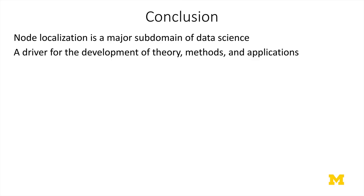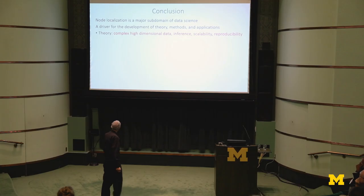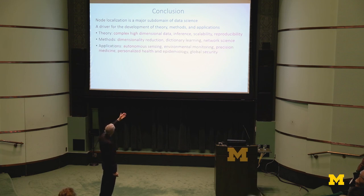I won't discuss the other areas because I've already talked enough. My conclusions — which you should understand after being hit on the head several times — are that node localization is a major problem and a major opportunity. It's a subdomain of data science that, just like other domains requiring extraction of information of value from highly complex data, is a driver for theory, methods, and applications. Some of the applications I haven't talked about include work we're currently doing in global security and environmental monitoring, but I'd be glad to discuss those later at your leisure.